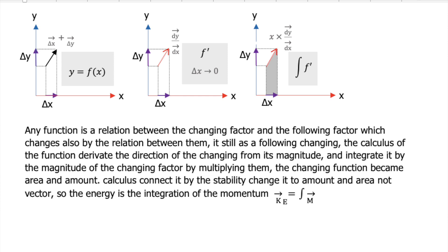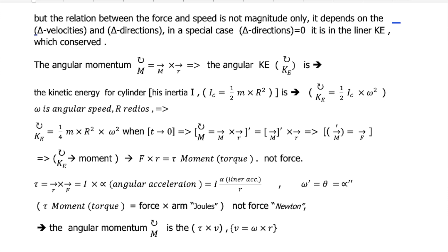Energy equals the integration of momentum, but the relation between force and speed is not magnitude only — it depends on delta velocity and delta direction. In the special case where delta direction equals zero, it is the linear case: linear kinetic energy, which is conserved. But the angular momentum is different, as we will exhibit.